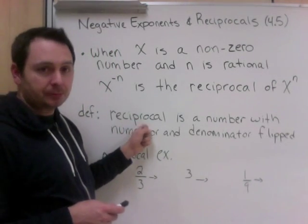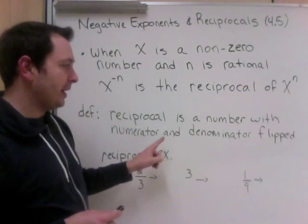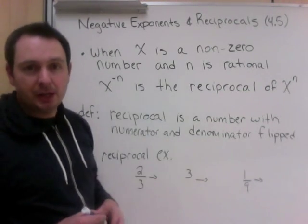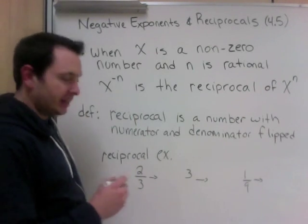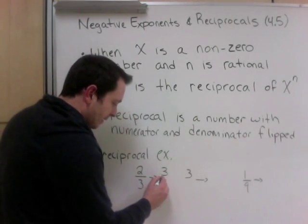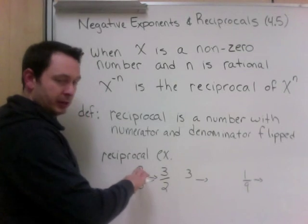So a reciprocal is a number with its numerator and denominator flipped. So the reciprocal of two-thirds, numerator, denominator, its reciprocal is 3 over 2. They flipped.